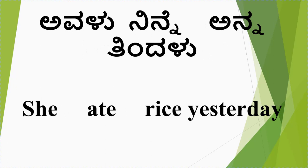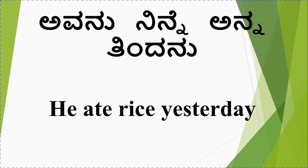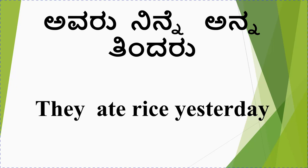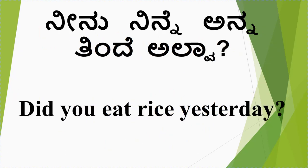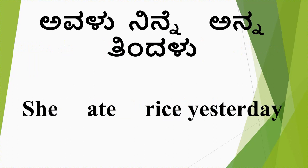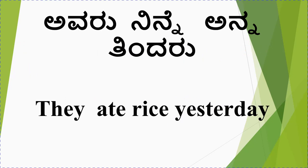She ate rice yesterday. She ate rice yesterday. Remember: she did eat — so if you used 'did', then you use the present form of that verb. They ate rice yesterday. Or else you can use: he did eat rice yesterday. Recap: I ate rice yesterday. Did you eat rice yesterday? She ate rice yesterday. He ate rice yesterday. They ate rice yesterday.